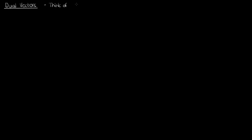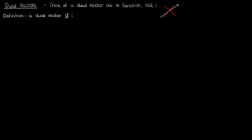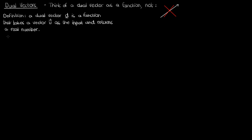Now the best way to think of a dual vector, and in fact define a dual vector, is as a function. You shouldn't think of it as an arrow between two points with a specific magnitude and direction like a regular vector — you should think of it as a function. A dual vector d, also called a one-form or a co-vector, is a function that takes a vector v as the input and spits out a real number.